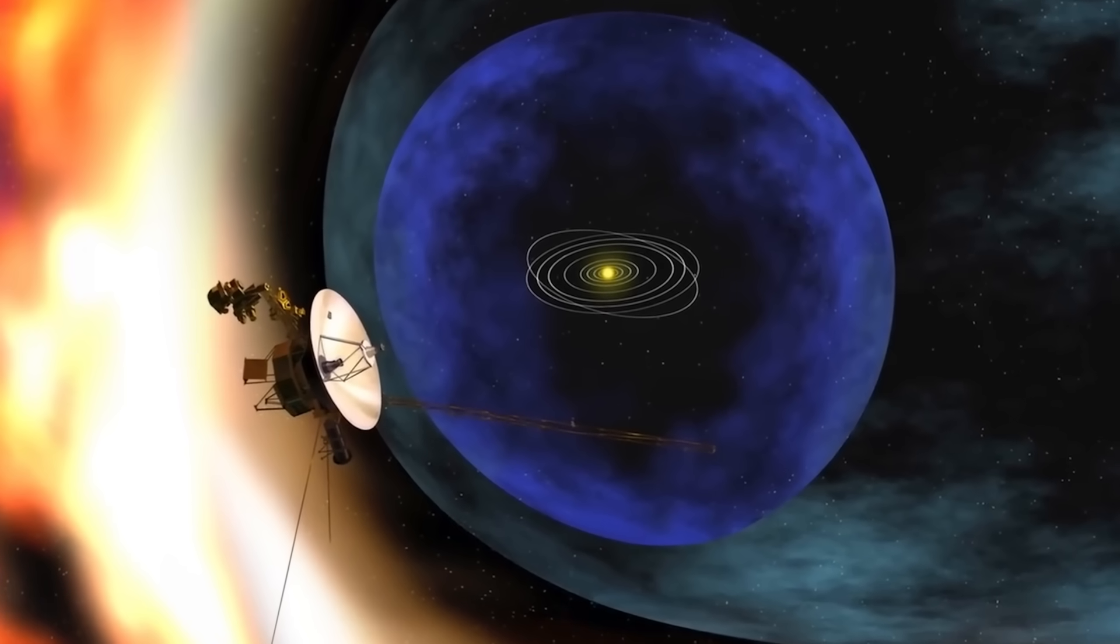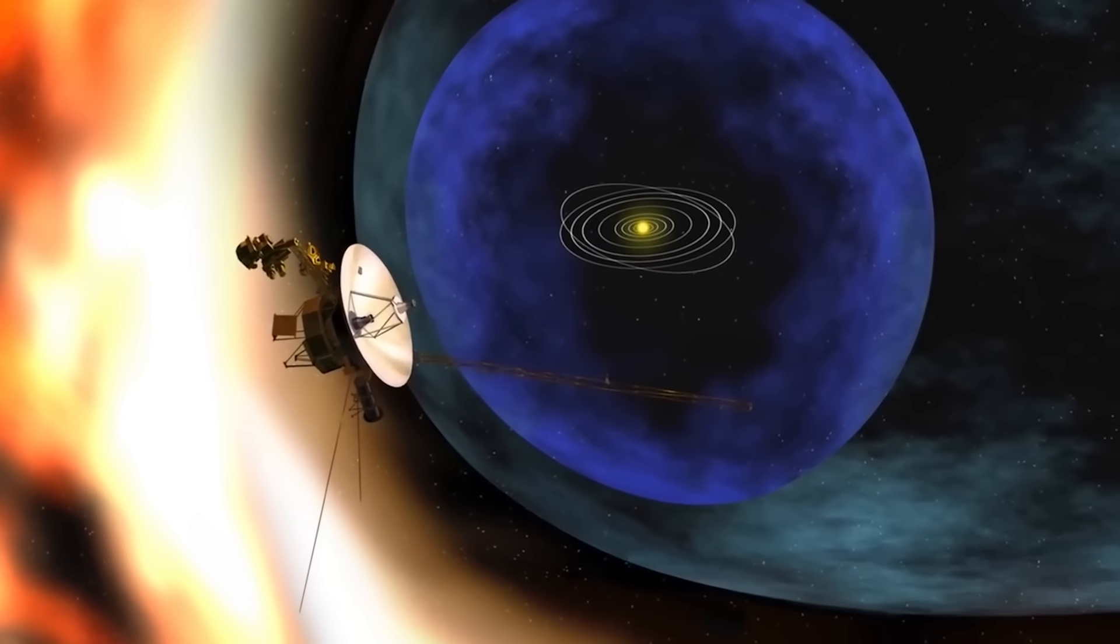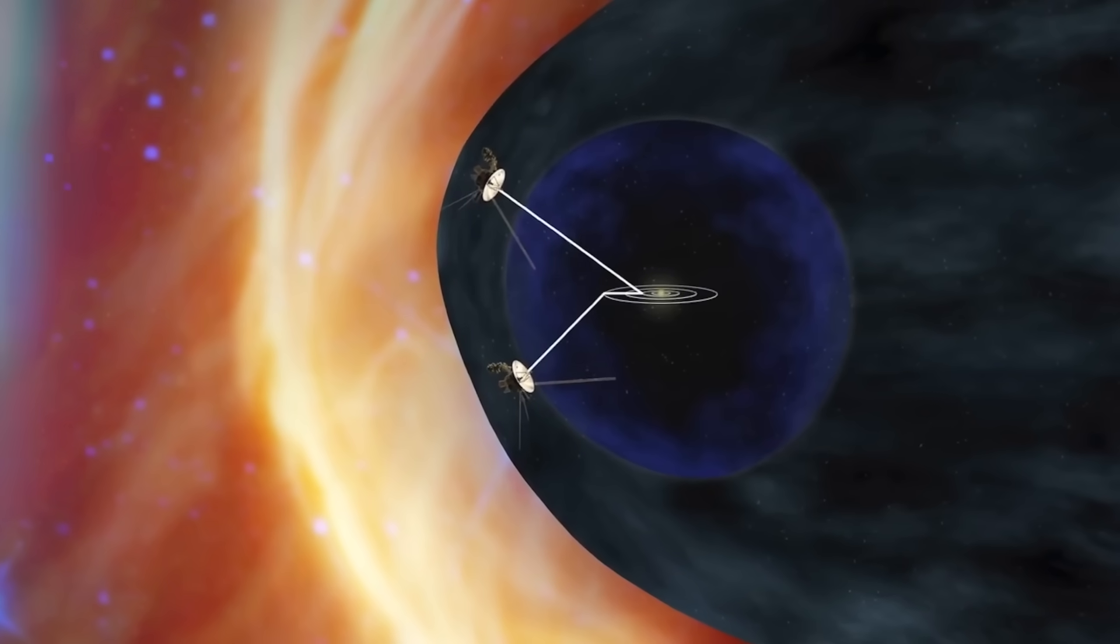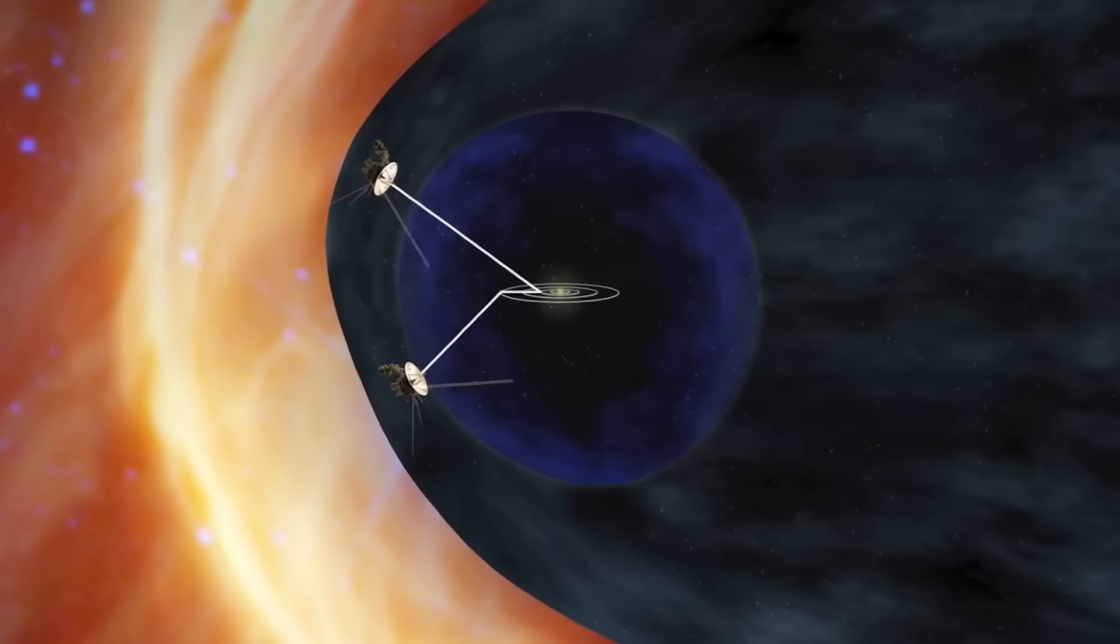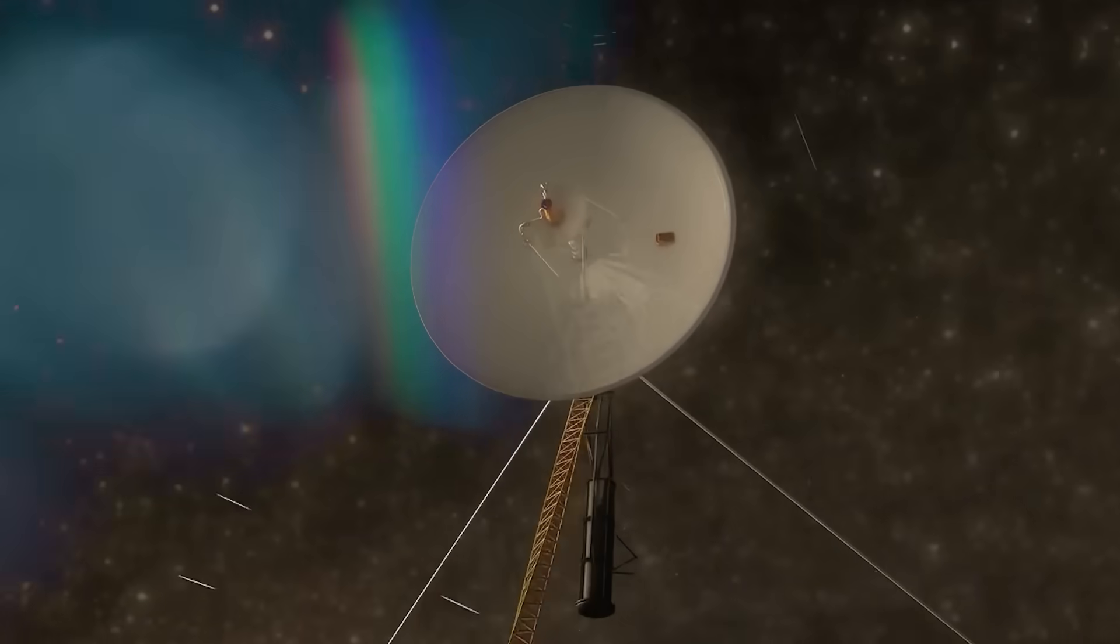When charted over time, the anomaly even curves slightly, suggesting it may not be a wall at all, but the outer skin of something larger. A bubble, a boundary, or perhaps a shell, enclosing something that defies our understanding of space itself.